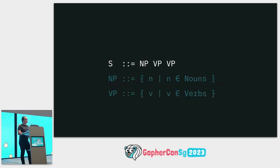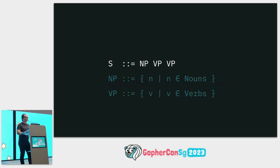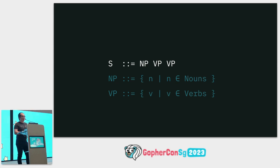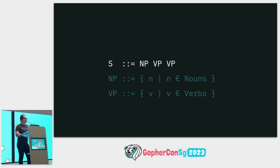A language has all the sentences that the grammar and vocabulary can make. We can write down the rules of a language — here I have written it down in BNF. This line says that a sentence is made up of a noun phrase, then a verb phrase, then a verb phrase.